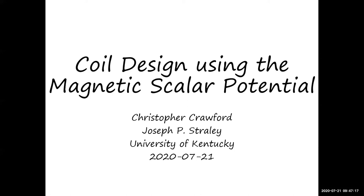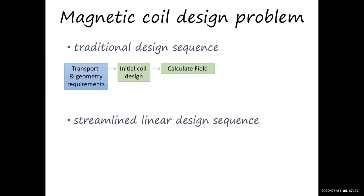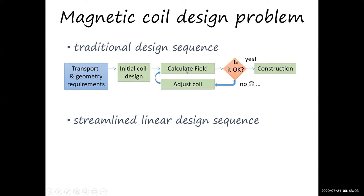I'm here to report on the general idea of using the magnetic scalar potential to design coils. The traditional design approach is that you have some field you want and some location where you have to put your coil. Normally you take all the requirements, guess at some winding, calculate the field using Biot-Savart or finite element methods, check if the coil is okay, and if not, make tweaks and keep iterating until you get what you wanted.